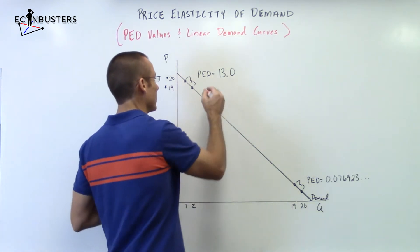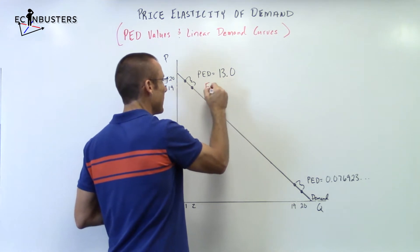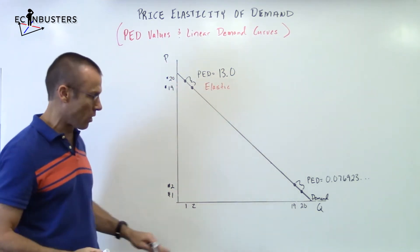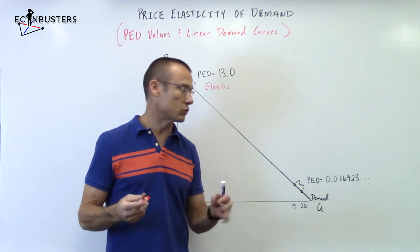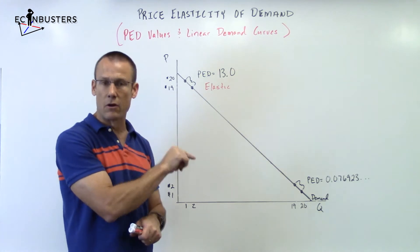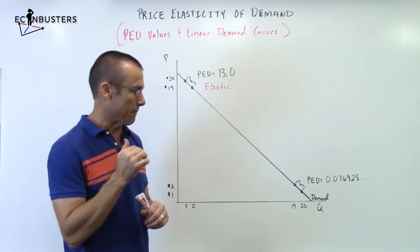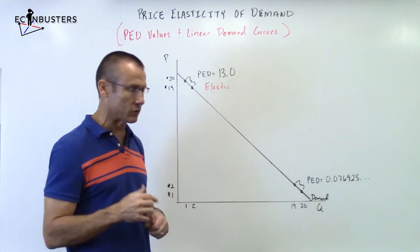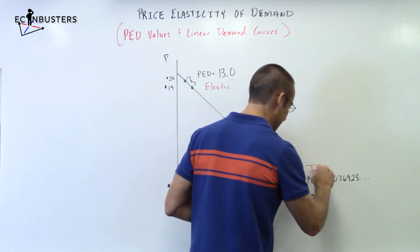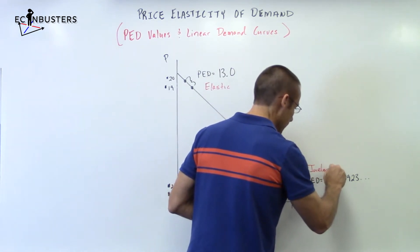So let me write that on the board. PED of 13, that is elastic. Now we get a situation where price is small and the QD is quite large. What are we getting here? We're getting a PED of a very small number. Look at that, 0.076923. What that is, that is inelastic.